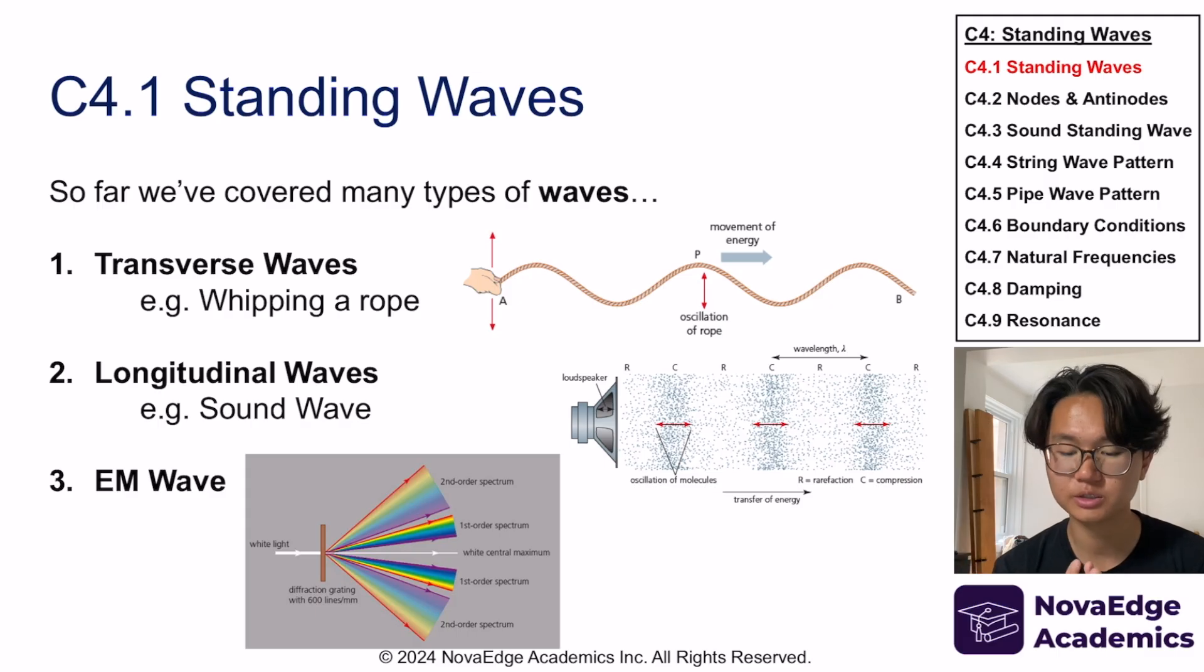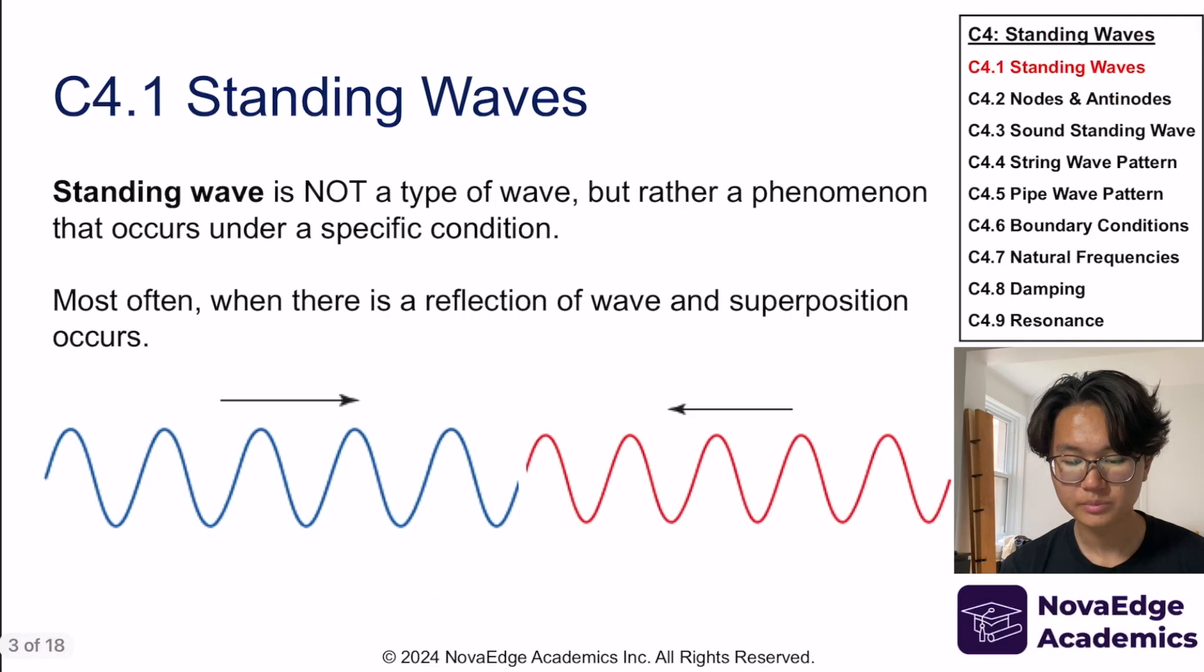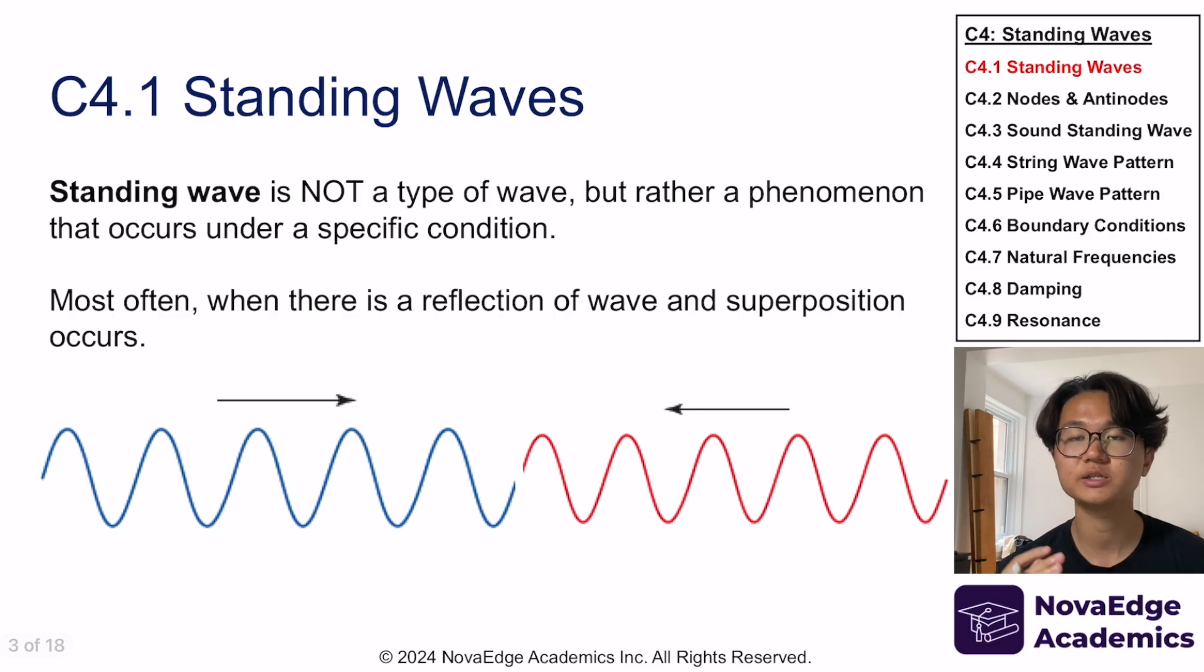Now we're trying to bring this all back together and talk about standing wave. So what is a standing wave? Well, I can tell you what it's not. It's not another type of wave. A lot of students get confused that standing wave is another type of wave. It is not. It is just a phenomenon that occurs under specific condition. The type of wave that makes standing wave can be any of the types. It can be transverse, longitudinal, EM wave. All of these can create standing wave. And that creation of standing wave is under a specific condition, usually when there's a reflection of wave and there's superposition that occurs.